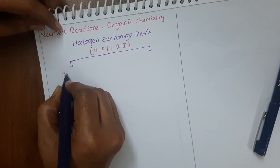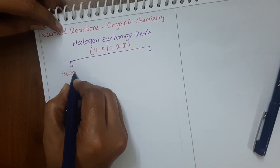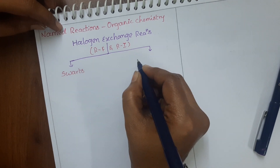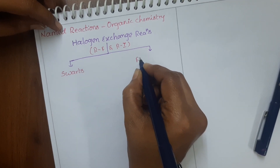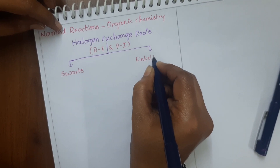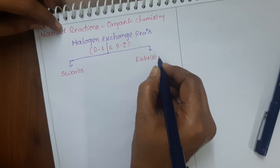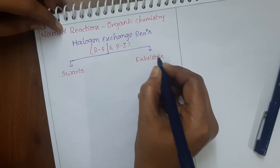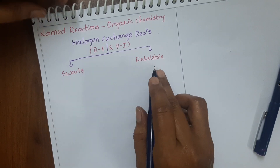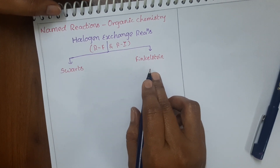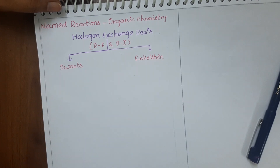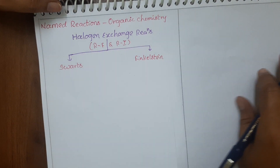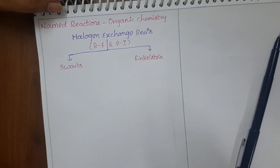The two halogen exchange reactions are: one is the Swartz reaction and the other one is the Finkelstein reaction. From these two reactions we can prepare either alkyl fluorides or alkyl iodides.